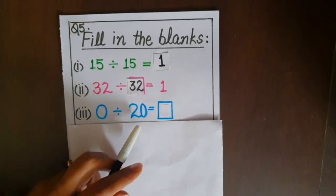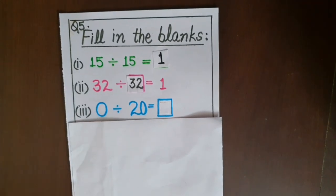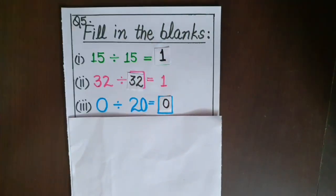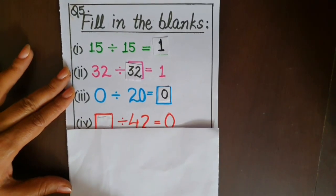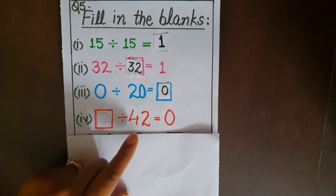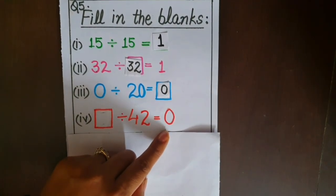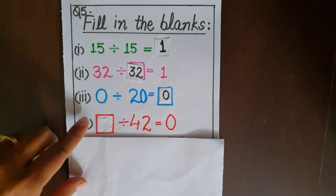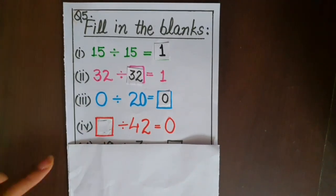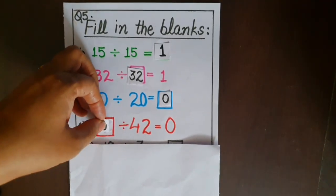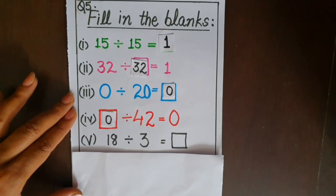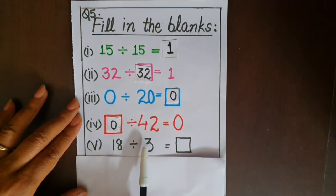Moving on to part three of question five: by dividing zero by 20, which answer will we get? Yes, we'll get an answer zero. Now part four: with which number should we divide 42 to get an answer zero? We have to fill in the blank — yes, we will divide 42 by zero.